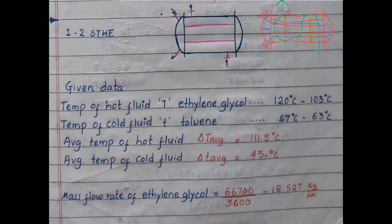This is the representation of a shell and tube heat exchanger. On the tube side, the inlet is labeled t1 and the outlet t2. The shell side uses capital T1 and T2. For a 1-2 exchanger, the fluid passes through the tubes, takes a turn, and comes back.